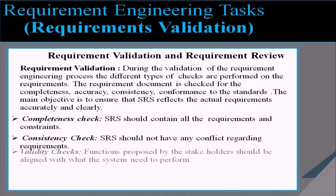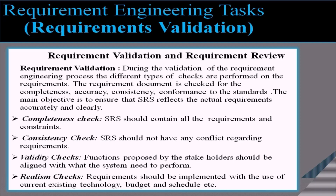The next step is requirement validation and requirement review. During the validation of the requirement engineering process, different types of checks are performed. The requirement document is checked for completeness, accuracy, consistency, and conformance to standards. The main objective is to ensure that the SRS reflects the actual requirements accurately and clearly. Completeness check ensures SRS contains all requirements and constraints. Consistency check ensures SRS has no conflicting requirements. Validity checks ensure that functions proposed by stakeholders align with what the system needs to perform. Realism checks ensure requirements can be implemented with current existing technology, budget, and schedule.